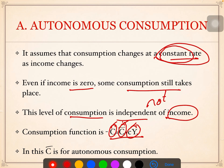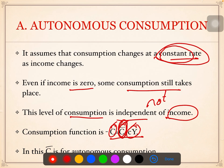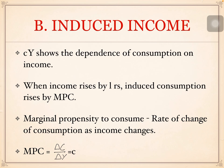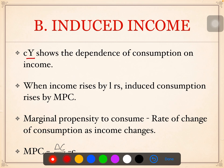C̄ is autonomous consumption, which is constant. Now let's talk about induced consumption. Induced consumption is completely dependent on income — represented as cY. If income is increasing, consumption will increase; if income is decreasing, consumption will decrease. So induced consumption expresses the dependence of consumption on income, unlike autonomous consumption which is constant and independent.